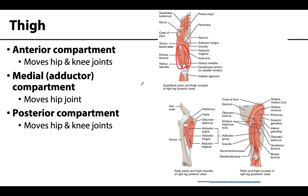The medial compartment is also called the adductor compartment, based on the primary action that occurs with contraction of these muscles. Adduction is moving the hip joint in the sagittal plane back towards the midline.